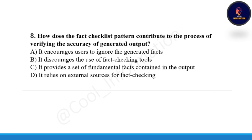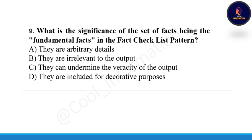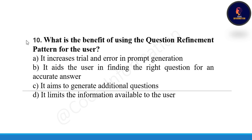Next question: How does the fact checklist pattern contribute to verifying the accuracy of generated output? The correct option is C — it provides a set of fundamental facts contained in the output. Following that: What is the significance of the set of facts in the fact checklist pattern? The correct option is C — they can undermine the veracity of the output.